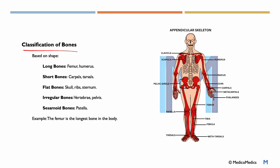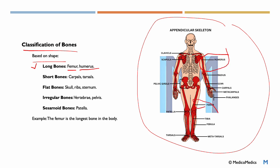Now, classification of bones. The classification of bones are based on shape. We have long bones like the femur and humerus. If you look at the illustration here, you see this is the humerus, and the femur is right here. This bone is the femur.